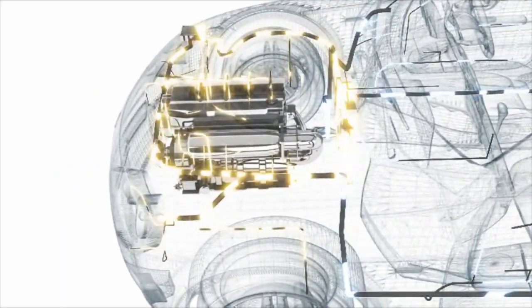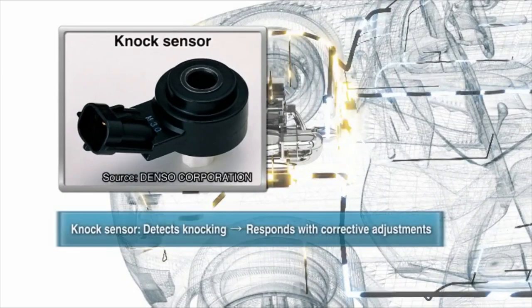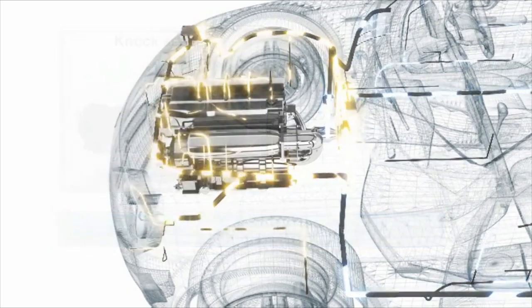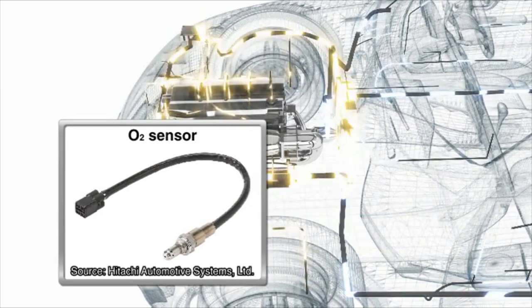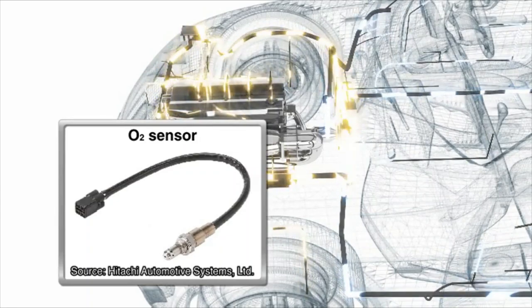Sensors that check the engine include the knock sensor, which detects engine knocks inside the cylinders. The oxygen sensor is attached to the exhaust manifold and detects the oxygen content of the exhaust. If oxygen is detected, the ECU adjusts the fuel injection rate with high precision.